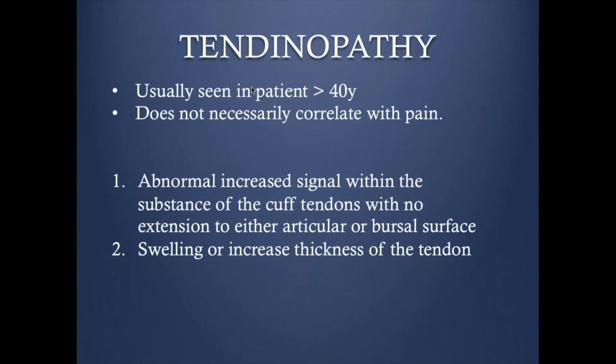The spectrum of rotator cuff disease could start from tendinopathy, partial tearing, full thickness tear, complete tear, and massive tear. We are going to go through the whole spectrum, usually seen in patients above 40, and it does not necessarily correlate with the patient's pain.